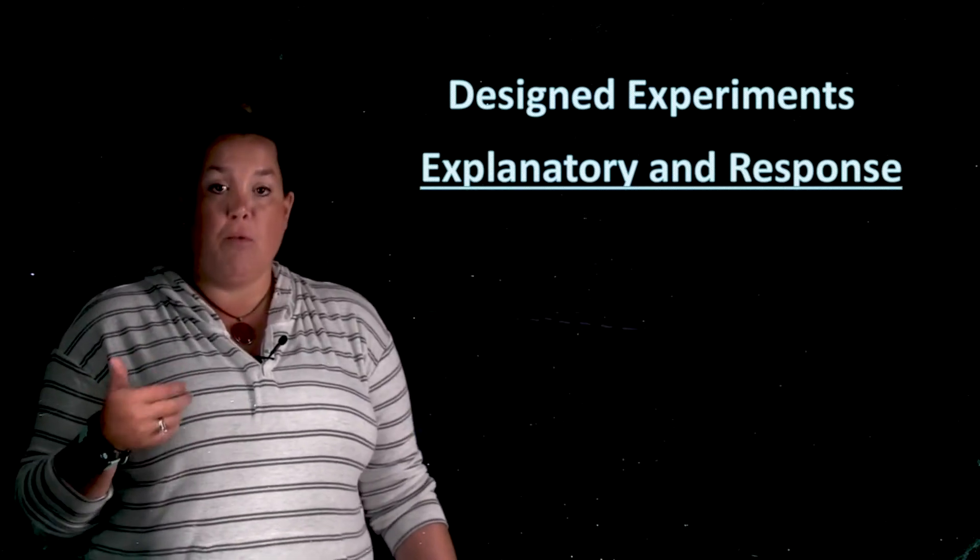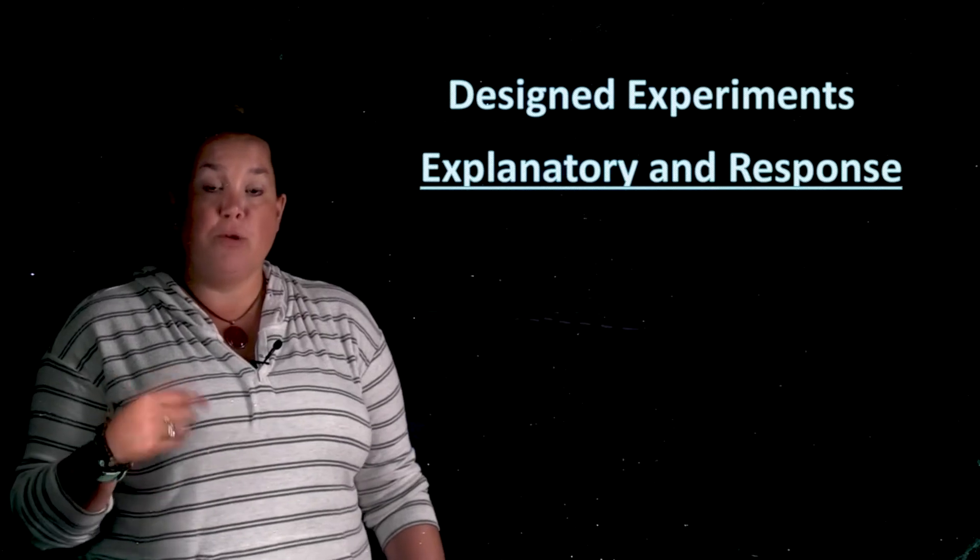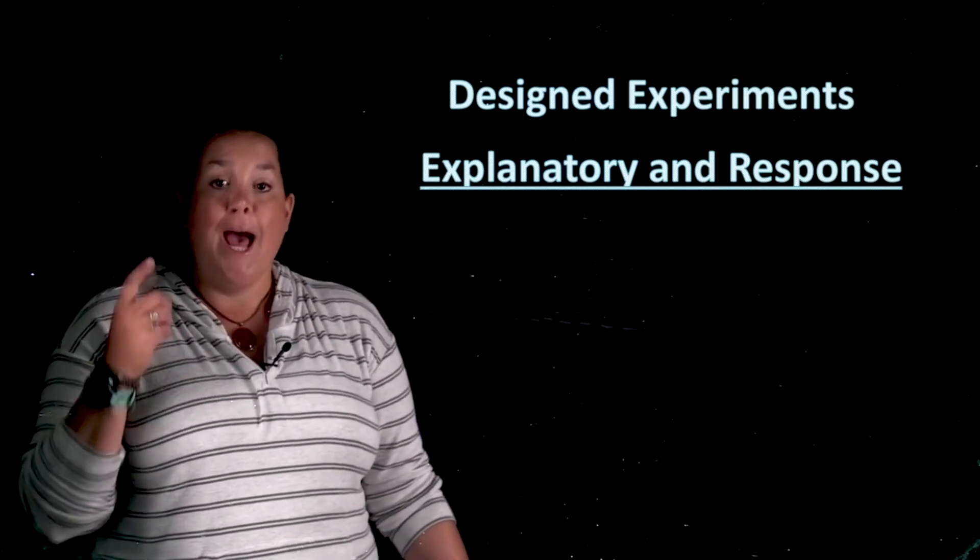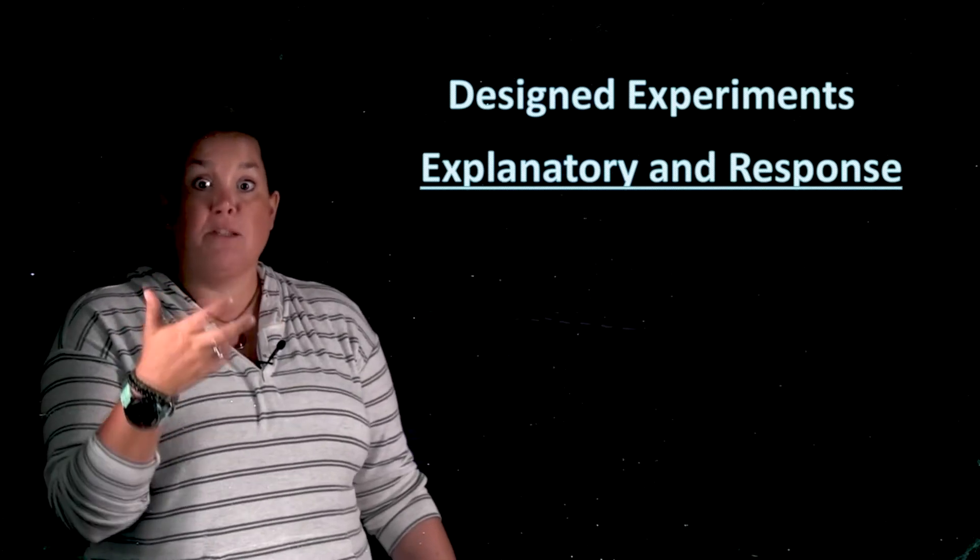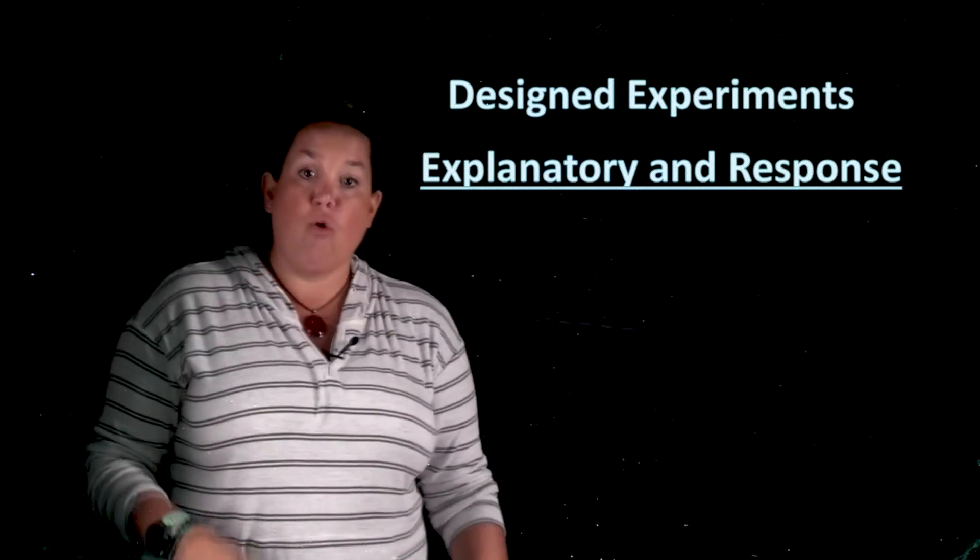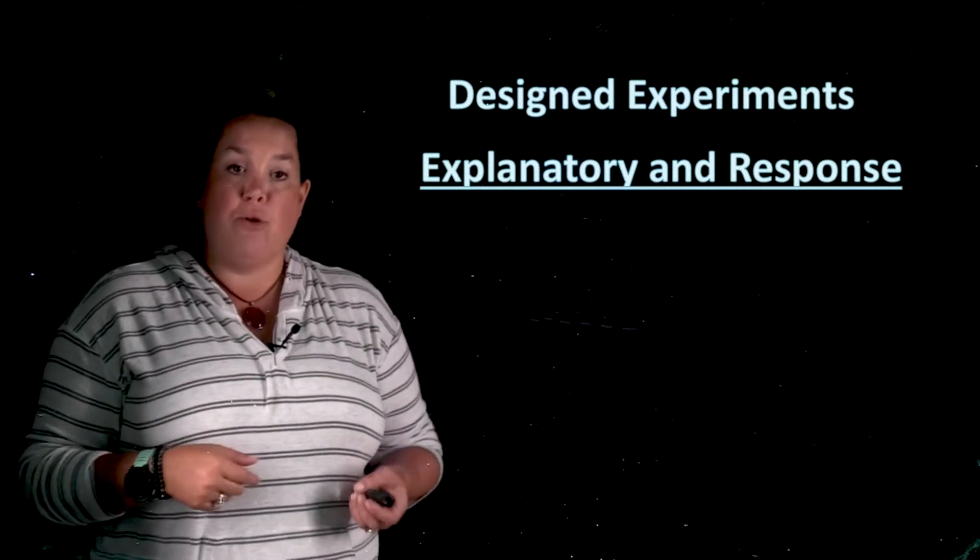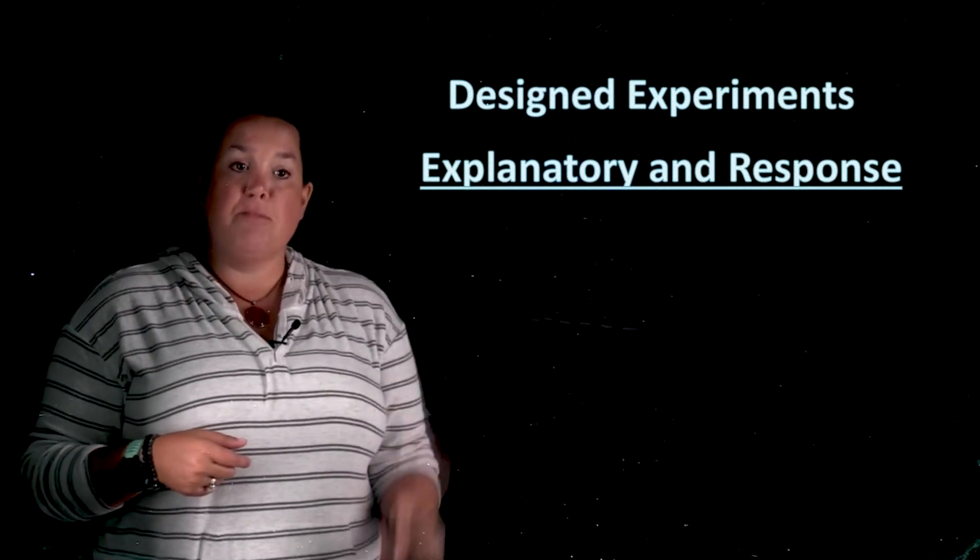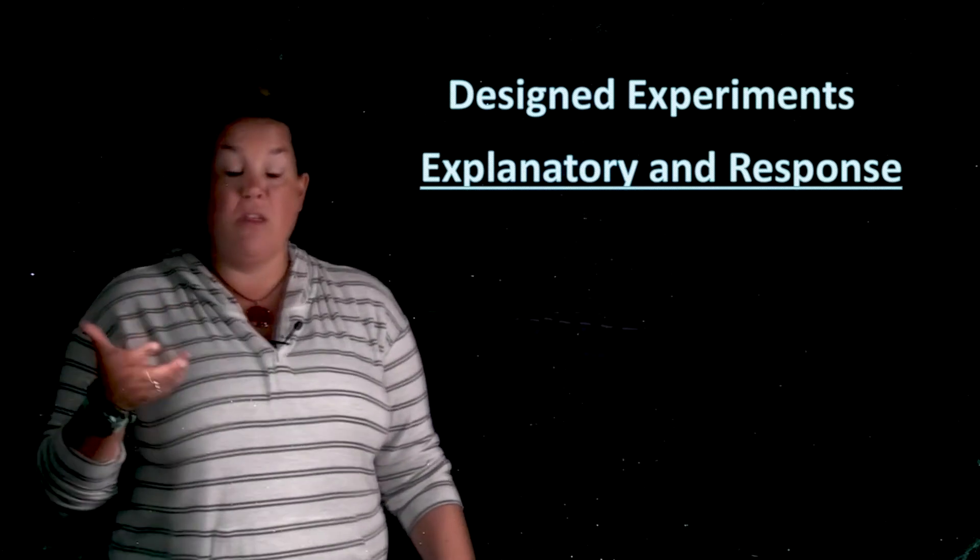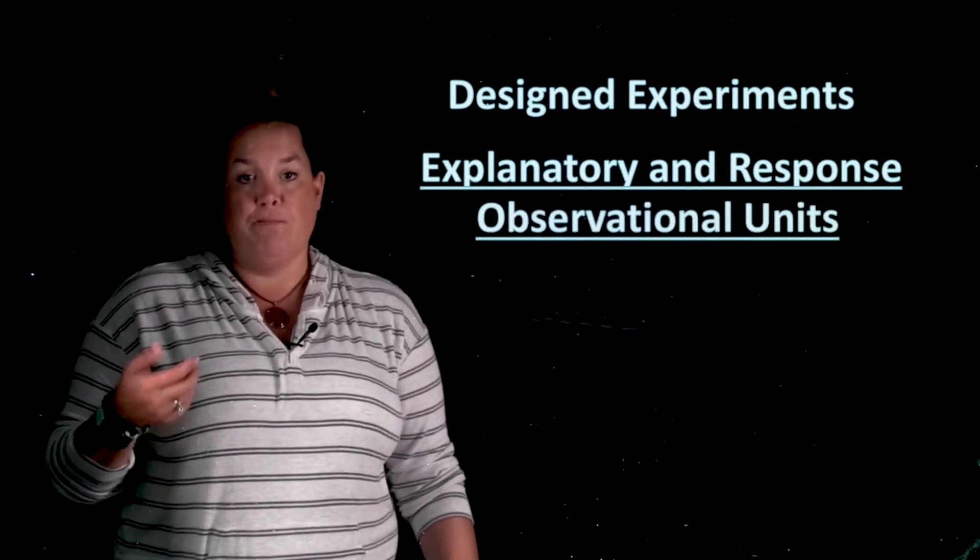Now the first set of vocab words that I want to remind you of is explanatory and response. In a designed experiment, this relationship and that direction is what we're primarily interested in. How does the explanatory variable, which remember explains, affect or cause change or how does the response variable respond to that explanatory variable? The response is going to be the outcome that we're interested in and the explanatory variable is going to be the thing that the experimenter or researcher is controlling or randomly assigning.